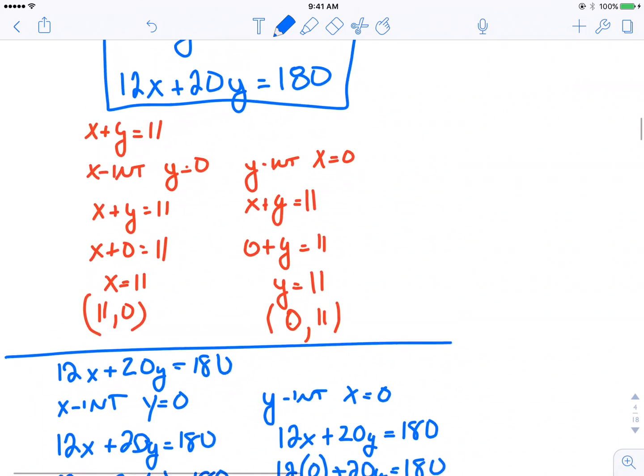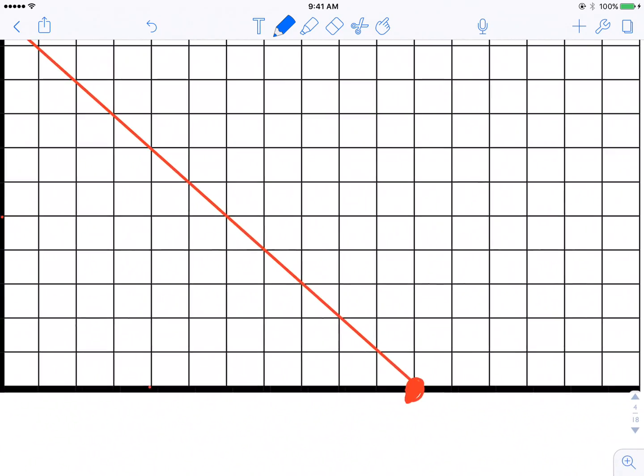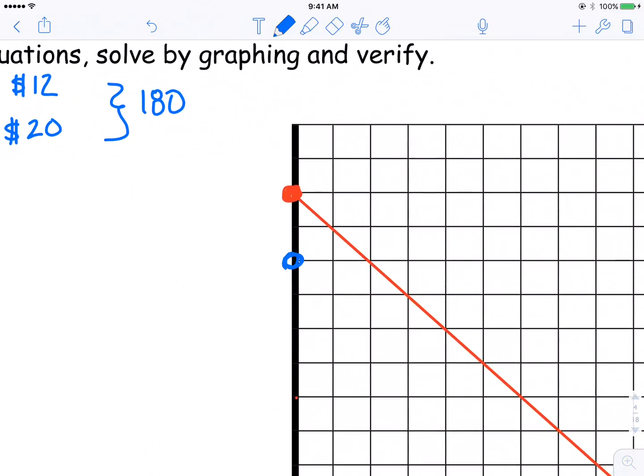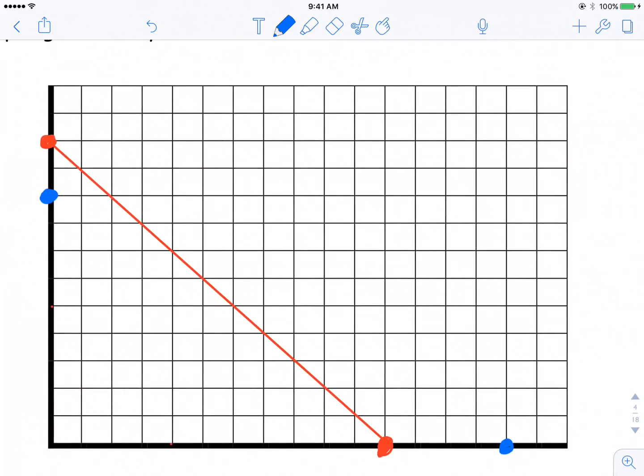There's my X and Y intercepts for my second equation: 15 comma 0 and 0 comma 9. I can plot those points on my grid and draw the line.